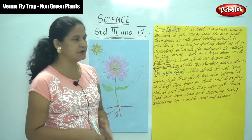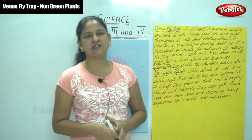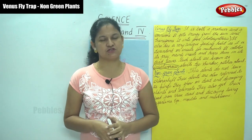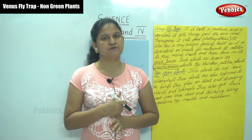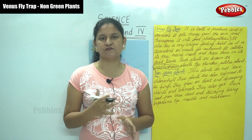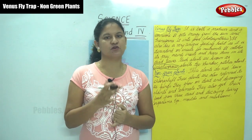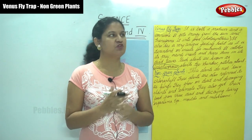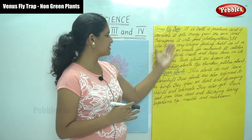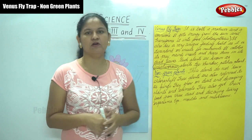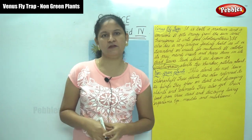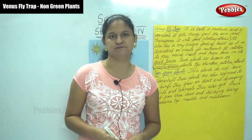Examples of non-green plants include molds and mushrooms. So these are the three types of amazing different plants: the cactus, the Venus flytrap, and non-green plants.